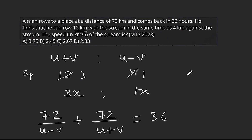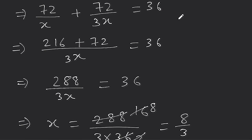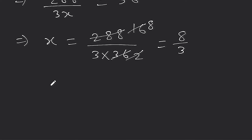अब find करने क्या बोला गया है question में — the speed of the stream। Stream का speed पूछा गया है, मतलब b निकालना है। u+b दिया था 3x और u-b दिया था x। तो इन दोनों को subtract करके 2 से divide करने पर b निकलेगा।